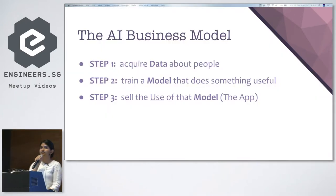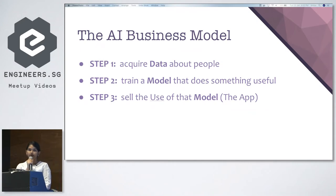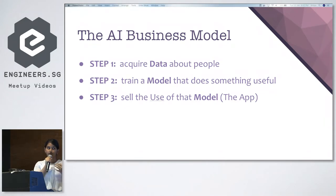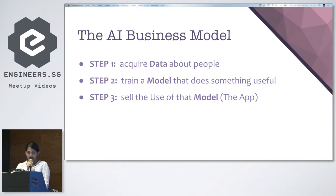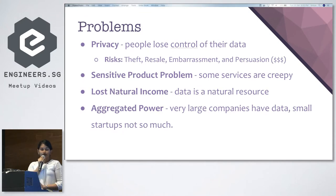First, I'm going to talk about the AI business model as it exists today. What companies usually do is acquire data about people — they get users to surrender their data, usually for free. The companies then take this data, train a model that does something useful, and sell the use of that model through an app of some sort. There are some problems associated with this model.